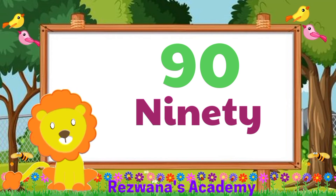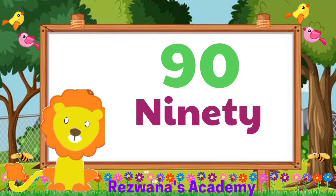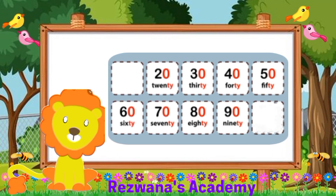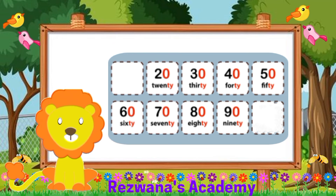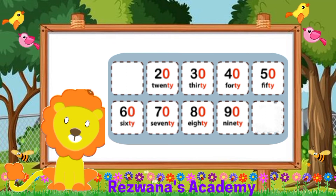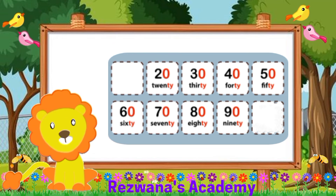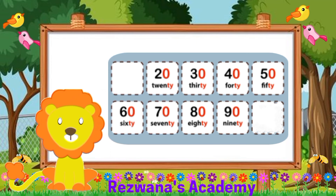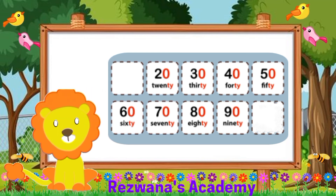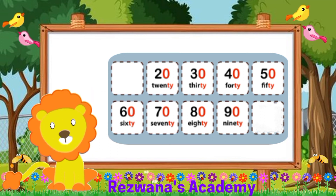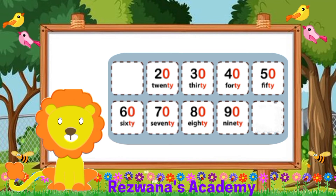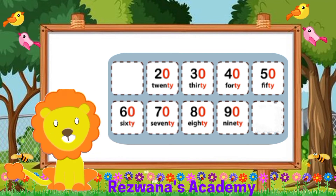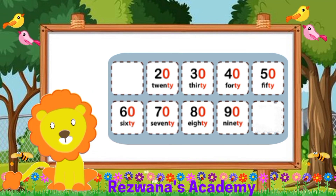So these are all the T numbers from 20 till 90. Let's recall all the T numbers that we have learned today: 20, 30, 40, 50, 60, 70, 80, and 90.